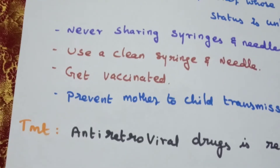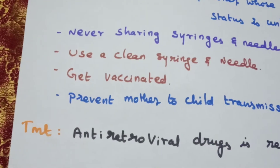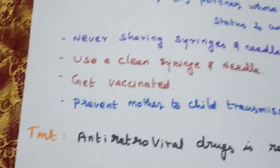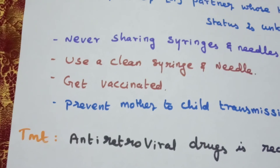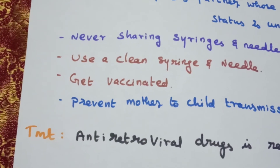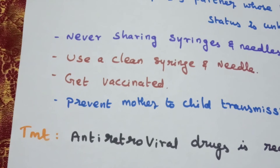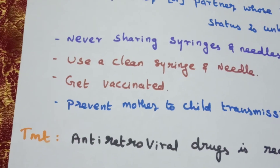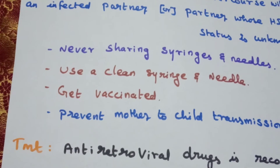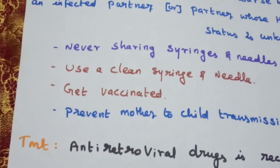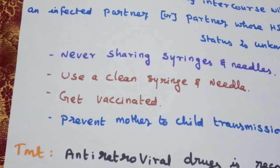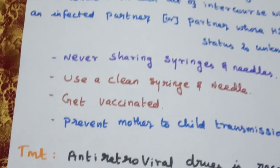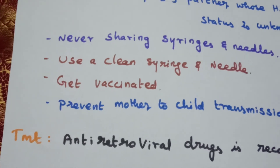Treatment: antiretroviral drugs are recommended and available. In this video, we discussed how HIV is transmitted and how to prevent it. The main ways are through sex, sharing syringes and needles, blood and organ transmission. To prevent: use a condom, never share syringes and needles, use clean syringes and needles, get vaccinated, and prevent mother-to-child transmission. Treatment: antiretroviral drugs. Thank you.